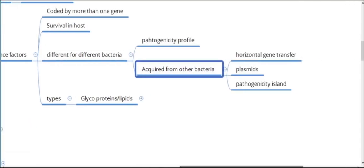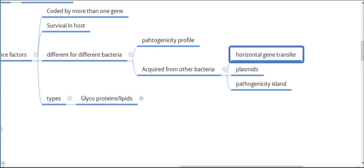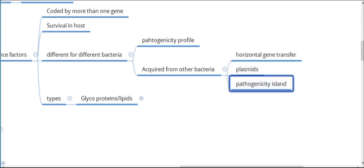The pathogenicity profile can be acquired from other bacteria by horizontal gene transfer through conjugation, transduction, or transformation. It can also be through plasmids — extranuclear circular DNA present inside bacteria that can work independently to produce virulence factors. Sometimes the bacteria acquire these genes as a separate cassette inserted into the whole genome; those sections are known as pathogenicity islands.